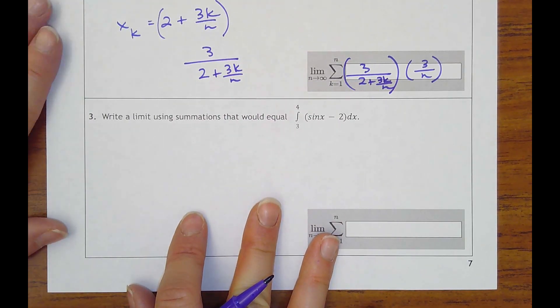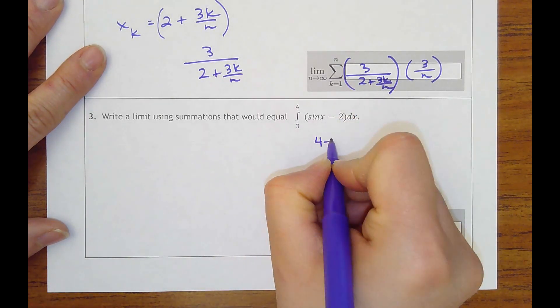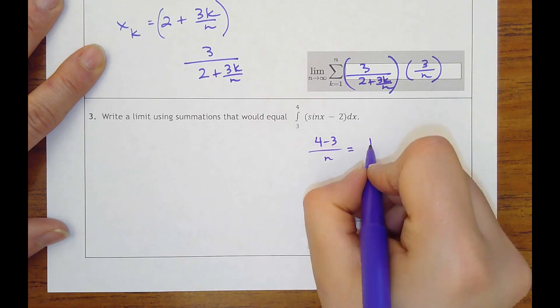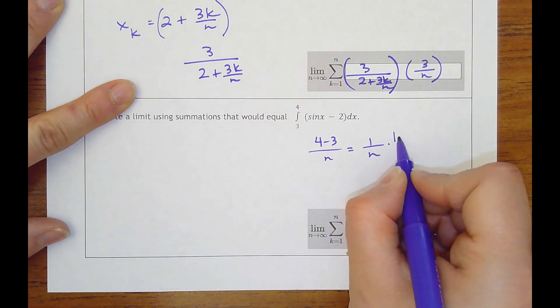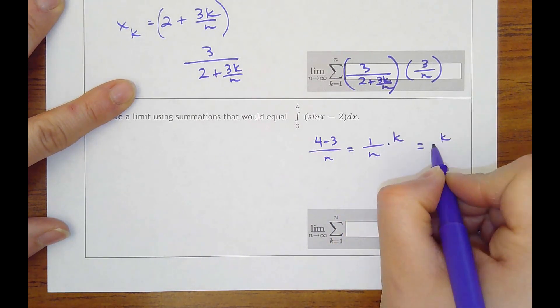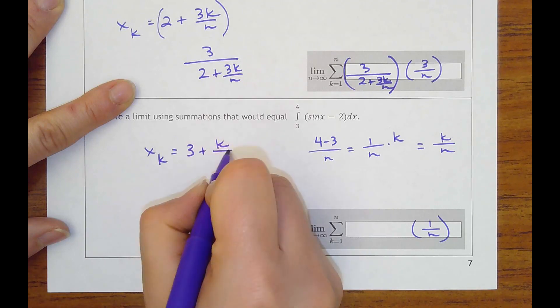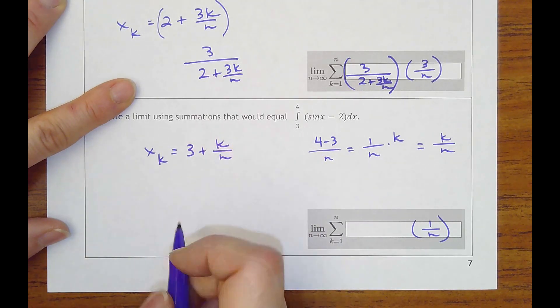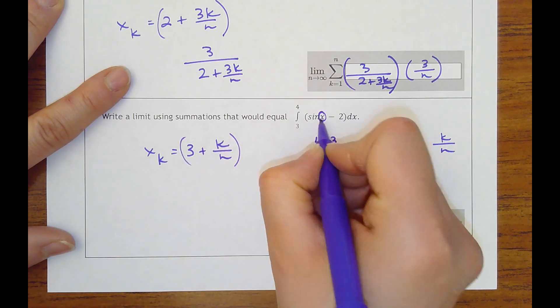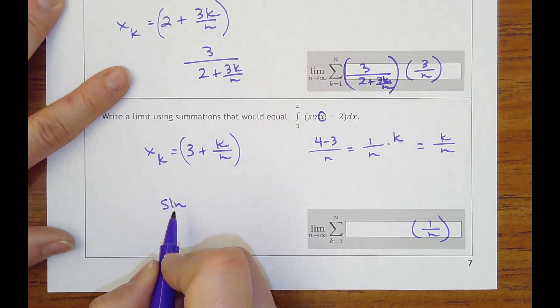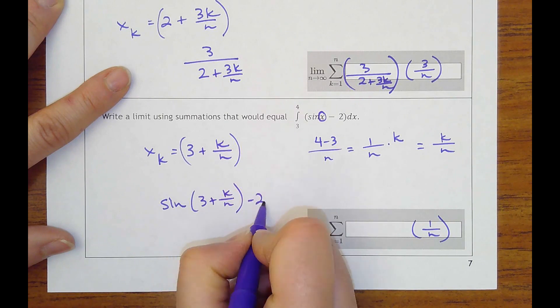Okay, try one more. Write a limit using summations that would equal the area from 3 to 4 of this function. Okay, 4 minus 3 divided by n number of rectangles is 1 over n. Okay, then I'm going to take that times k, so I have k over n. So I'm starting at 3 and adding k over n to it. And so then I would plug that in for x, so it's going to look like sine of 3 plus k over n minus 2 here.